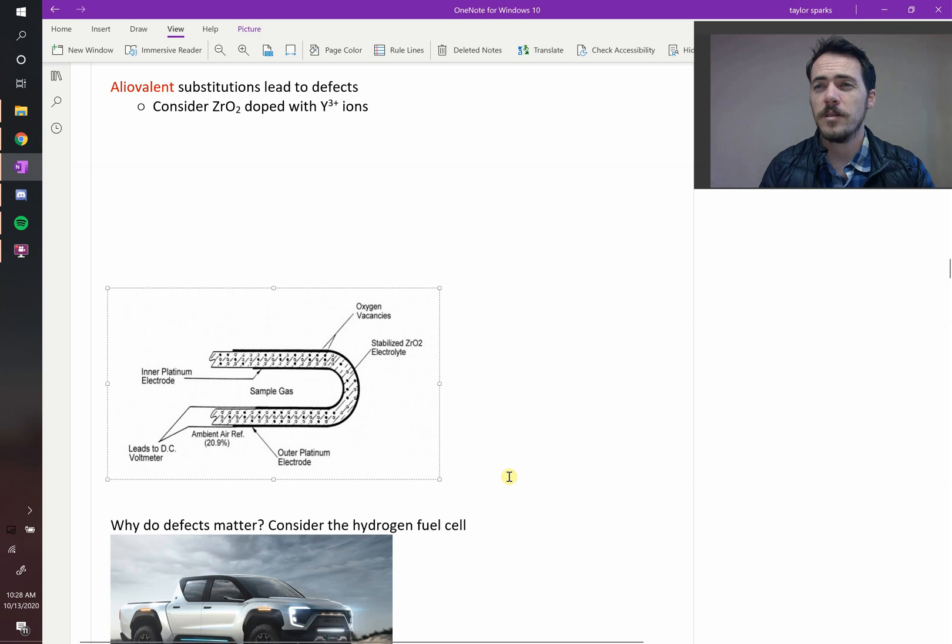Alright, in ceramics, there's something called an alleovalent substitution. We care about these because these are substitutions that you can make to intentionally create certain types of defects in your crystal that you want. An alleovalent substitution is one where you swap in a new cation or anion for the host one, but it has to have a different charge than the host anion or cation.